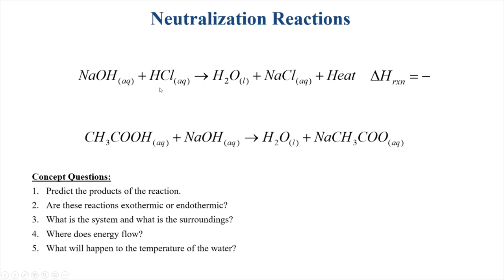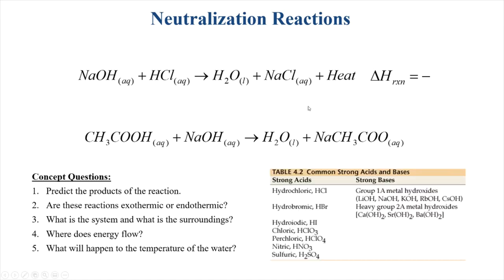We're going to run two reactions with two different acids. In the first we'll run it with HCl, and in the second with acetic acid. The question you have to answer today is which reaction should give off more energy — which one will have the larger delta H. Hint: in chapter four there's a table of strong acids and strong bases, and hydrochloric acid is a strong acid. You'll notice that acetic acid does not appear in that table, so that should give some indication as to which reaction should produce more energy. The difference might be relatively small, but you should be able to predict which one should have the larger delta H.